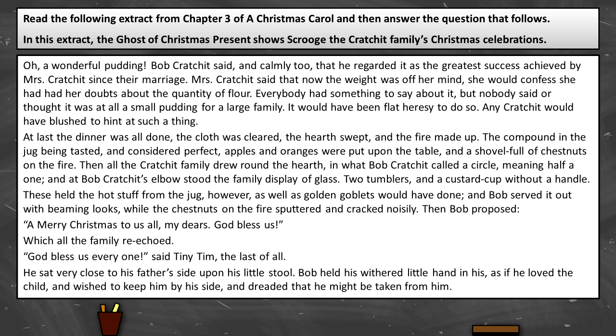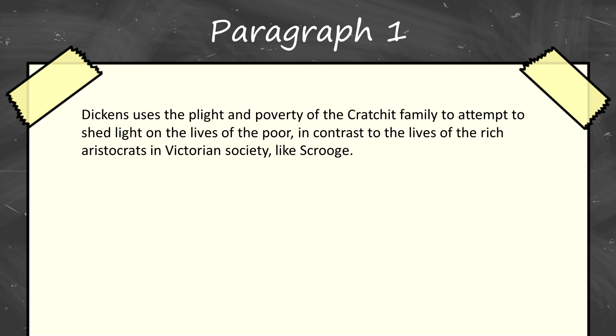This A Christmas Carol essay is nine paragraphs long. Dickens uses the plight and poverty of the Cratchit family to attempt to shed light on the lives of the poor, in contrast to the lives of the rich aristocrats in Victorian society, like Scrooge.